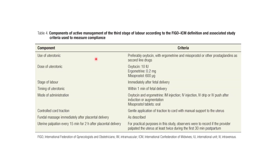The components of active management of third stage of labour include giving uterotonic drugs such as oxytocin, ergometrine, misoprostol, or other prostaglandin drugs. Doses: oxytocin 10 international units, ergometrine 0.2 milligrams, and misoprostol 600 micrograms.